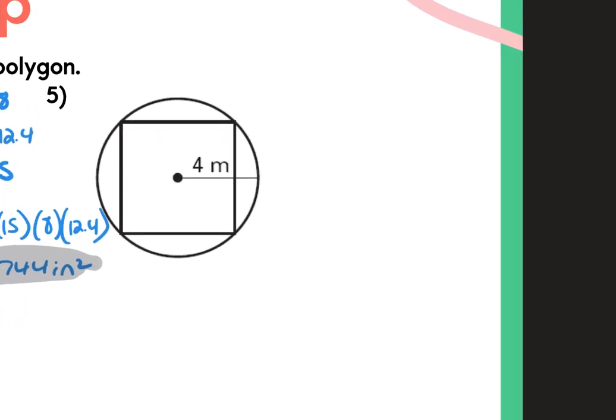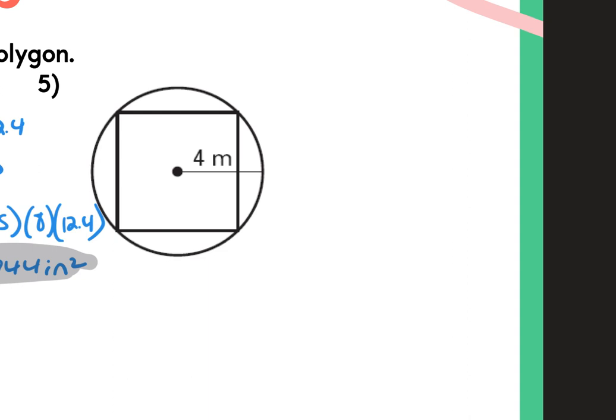Number 5 is a square inscribed in a circle. The measurement given is the radius, so it's 4 — not the apothem. To find the apothem, we can use special right triangles. We'll practice the central angle method: 360 divided by 4 is 90 degrees. Cut that in half to get a 45-45-90 triangle.